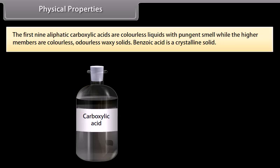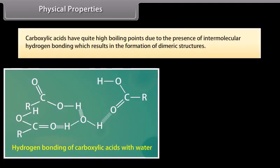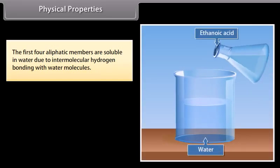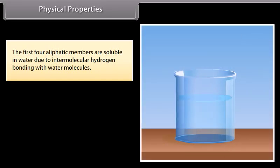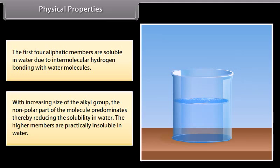Physical properties: the first nine aliphatic carboxylic acids are colorless liquids with pungent smell, while the higher members are colorless, odorless, waxy solids. Benzoic acid is a crystalline solid. Carboxylic acids have quite high boiling points due to the presence of intermolecular hydrogen bonding, which results in the formation of dimeric structures. The first four aliphatic members are soluble in water due to intermolecular hydrogen bonding with water molecules. With increasing size of the alkyl group, the non-polar part of the molecule predominates, thereby reducing the solubility in water, and the higher members are practically insoluble in water.